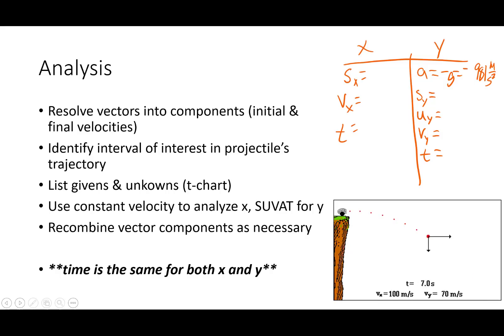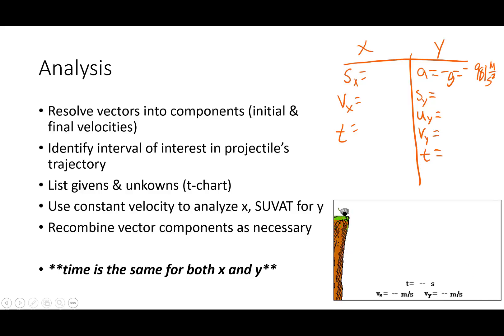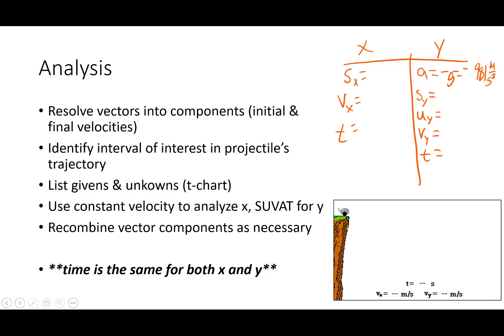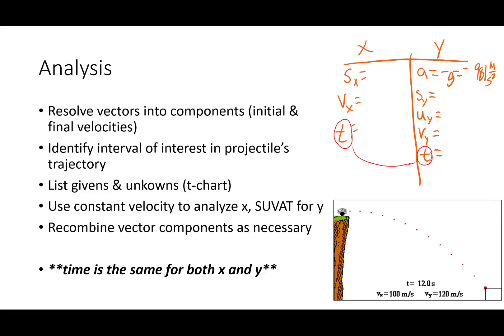Our overall strategy is going to be to resolve any vectors into our x and y components — horizontal and vertical — which is usually just going to be our velocities. We're going to identify the interval of interest in the projectile's trajectory, list our givens and unknowns in a t-chart with x direction and y direction, and then use our constant velocity equations to analyze x or SUVAT equations to analyze y. At the end, we might need to recombine our velocity vectors into a resulting velocity. One other important thing to note is everything's broken into components except time — so if we solve for time in the x direction, we know it for the y direction, and vice versa.